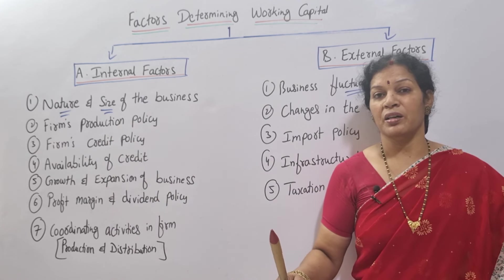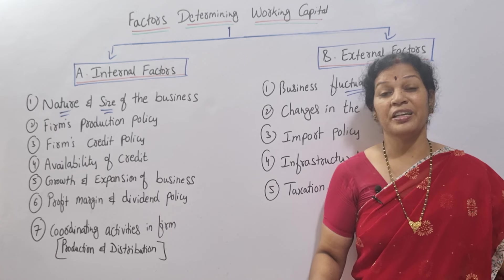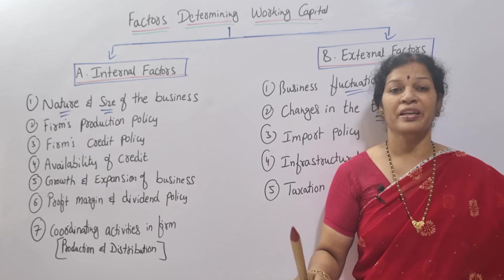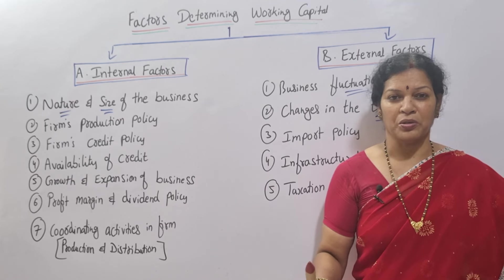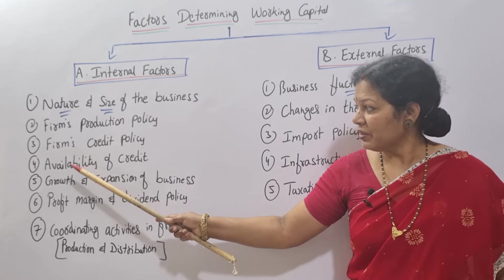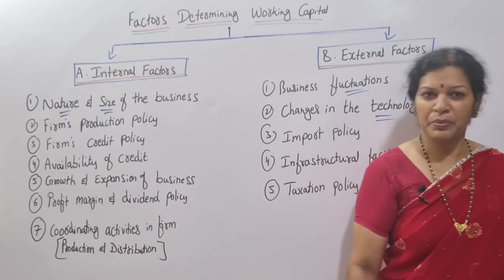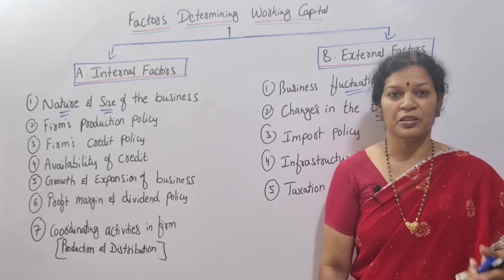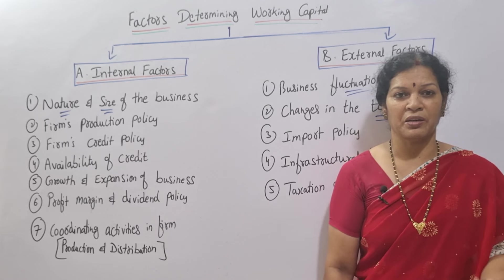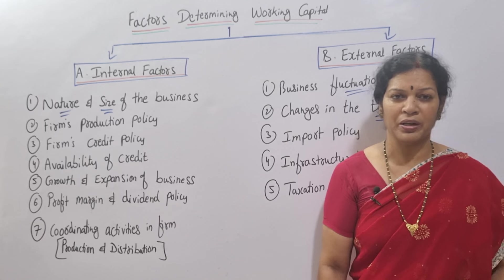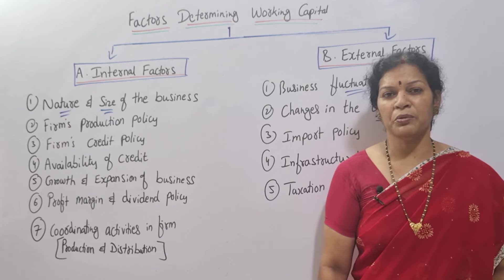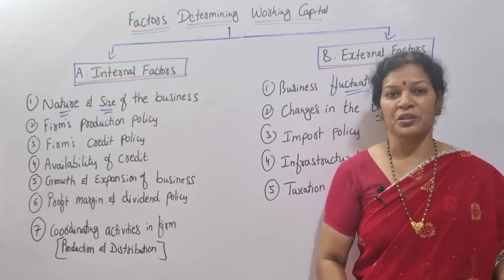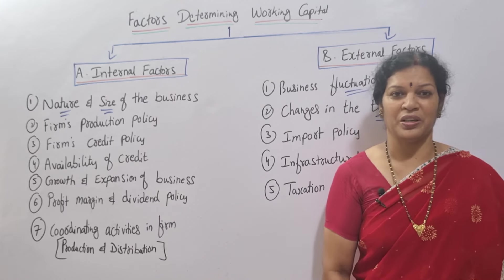If you have a lot of debtors, you need a lot of credit and that requires more working capital. Conversely, if you have good availability of credit from suppliers, then you don't need to arrange as much working capital on your own.